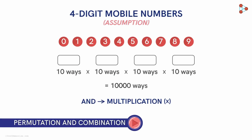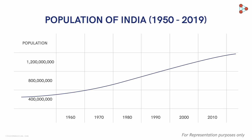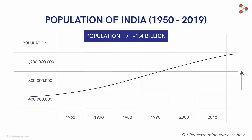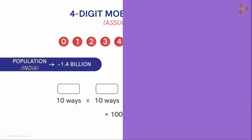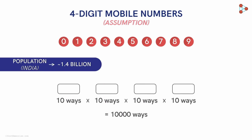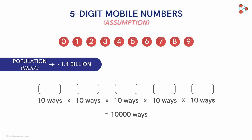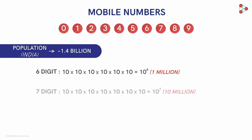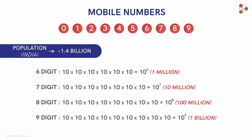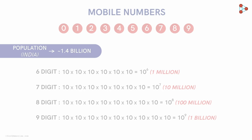10,000 is nowhere close to India's current population, which is close to 1.4 billion and constantly increasing. So having a 4-digit mobile number is out of the question. What if we consider 5 digits? After calculation, we get 100,000 different possibilities — still not an option. And the results for mobile numbers with 6, 7, 8, or even 9 digits also do not satisfy the demands of India's current population. So what should we do next? Let's check for mobile numbers comprising of 10 digits.